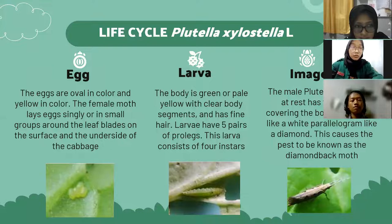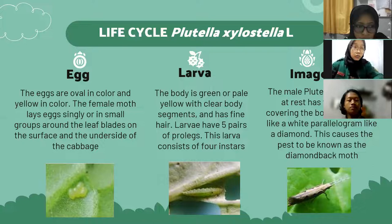Life cycle of Plutella xylostella. First, the egg stage: the eggs are oval and yellow in color. The female moth lays eggs singly or in small groups around the leaf, placed on the surface and the underside of the cabbage.